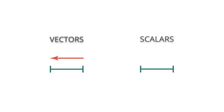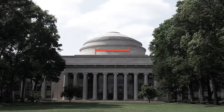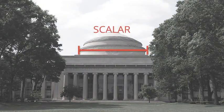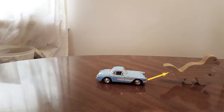Let's see some examples of each. The length of something is a scalar because it's just the magnitude. A force exerted by someone pulling something is a vector because we care about the strength of the force, the magnitude, and the direction in which the force is acting.